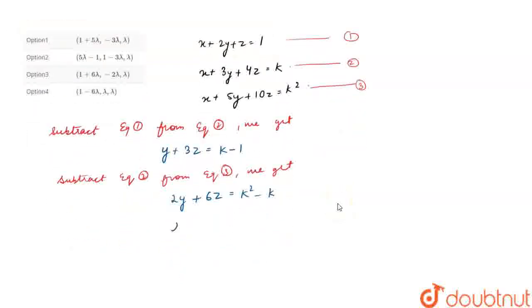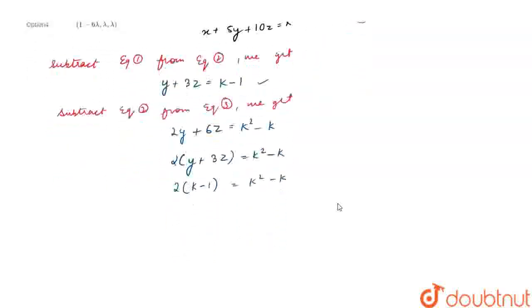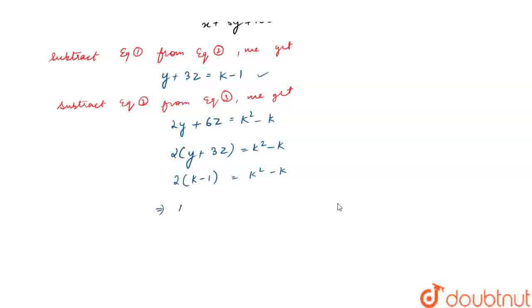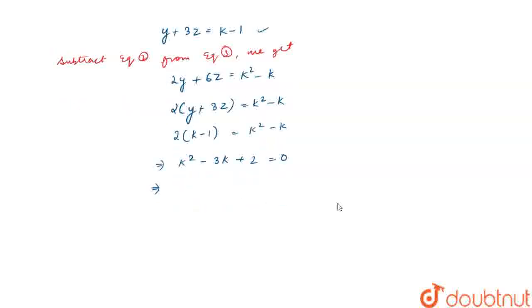Taking 2 common from the result of subtracting equation 2 from equation 3, we get y plus 3z equals to k square minus k divided by 2. Since y plus 3z already equals k minus 1, we set k minus 1 equals to k square minus k, giving us k square minus 3k plus 2 equals to 0. By factorization, k equals to 1 and k equals to 2.